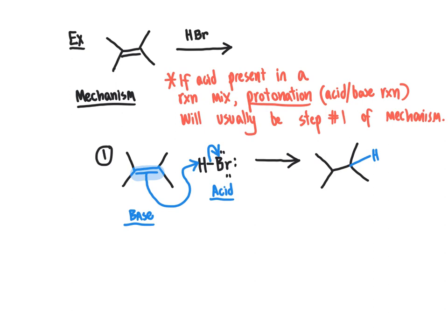As a result of that protonation step, the other carbon — the one that didn't pick up the proton — is going to only have three bonds to it, so it's going to have to be a positively charged carbon. We have a carbocation intermediate now, and in this case it's a tertiary carbocation intermediate, so it's quite stable. The other intermediate generated is going to be the bromide anion. Our bromine initially had three sets of lone pair electrons, and then we broke that covalent bond between H and Br, sending the electrons onto the bromine, thereby giving the bromine a negative one formal charge.